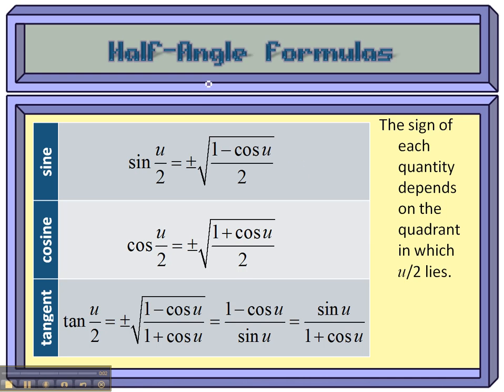Now we have our three half-angle formulas, or five formulas, depending on how you count these. Notice that the tangent one has three different forms.